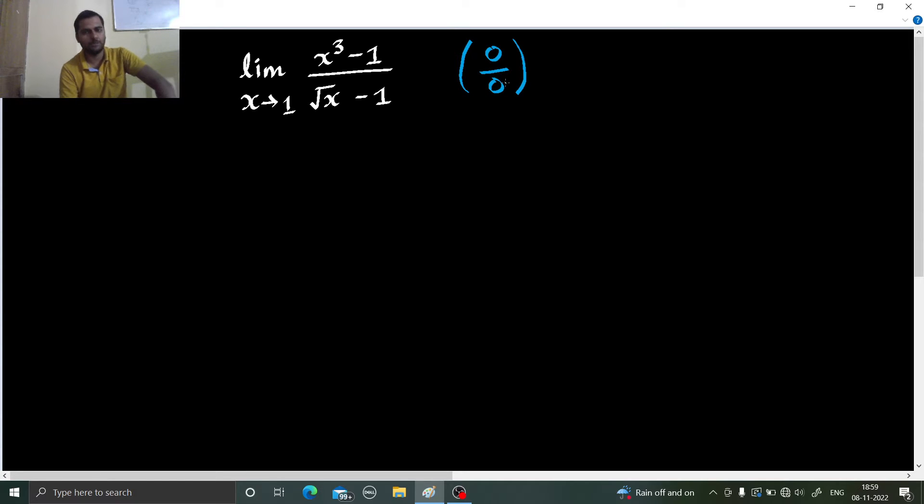You know that a cube minus b cube is a minus b, a square plus ab plus b square.